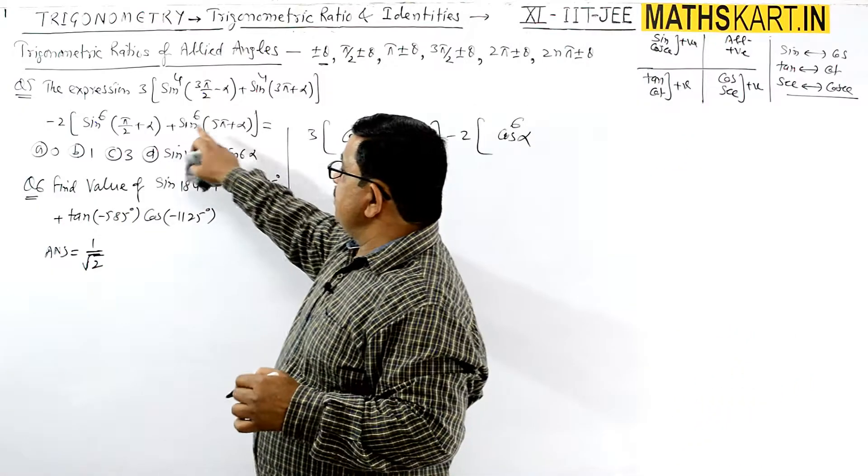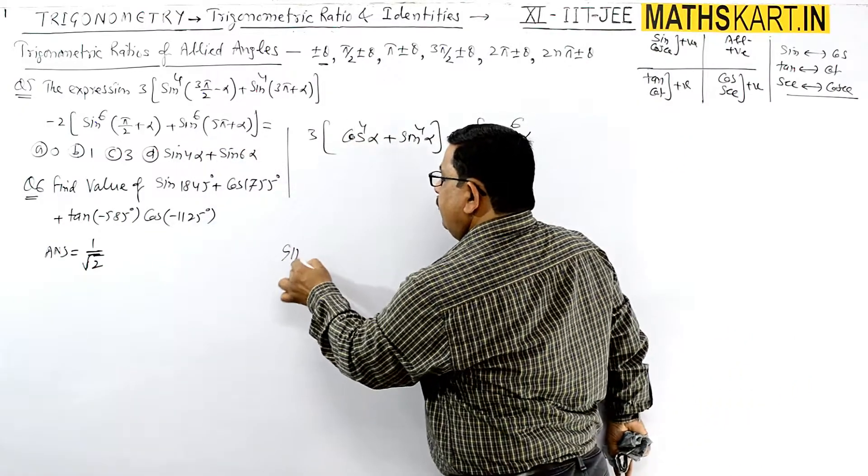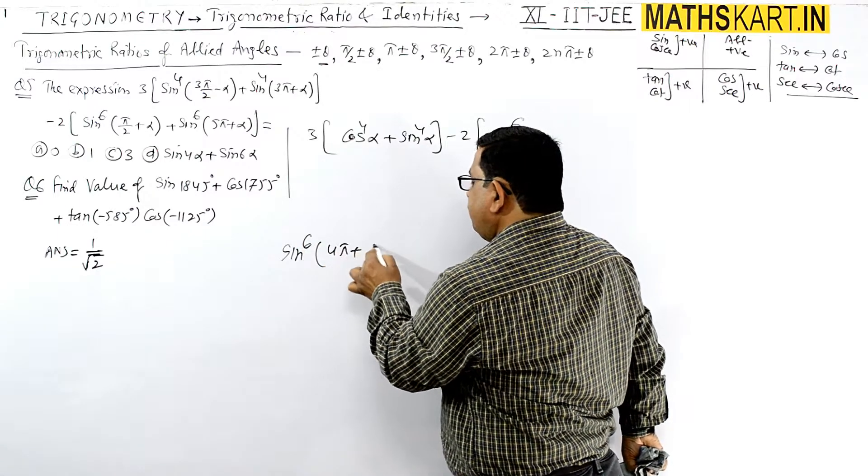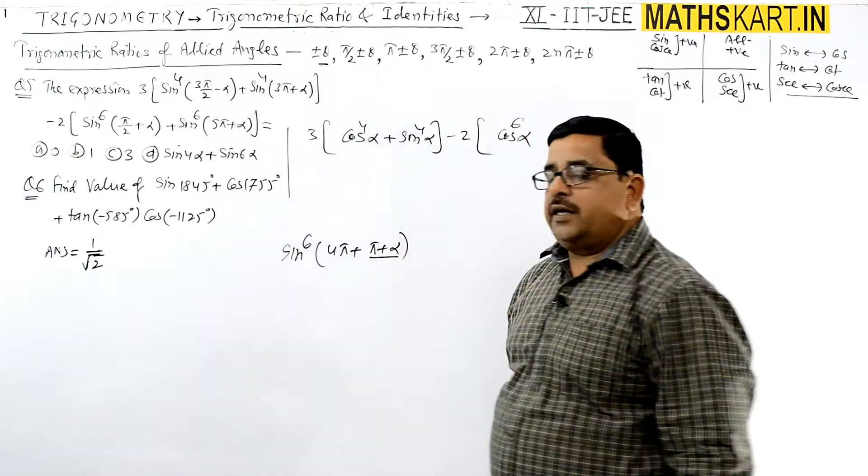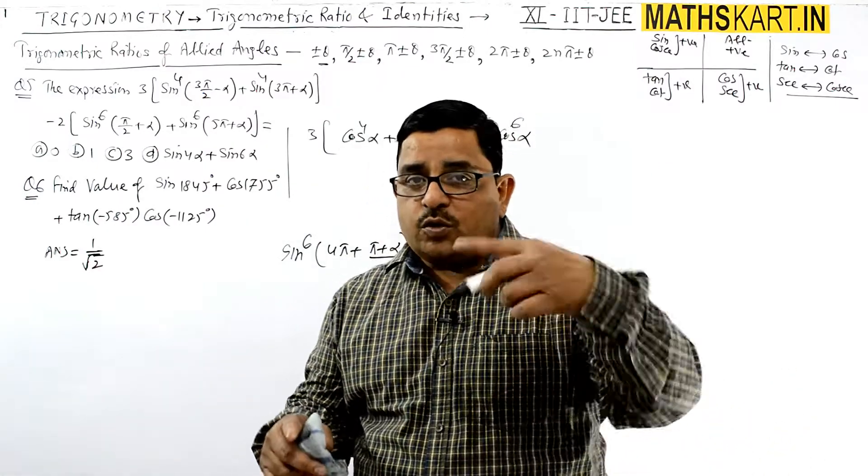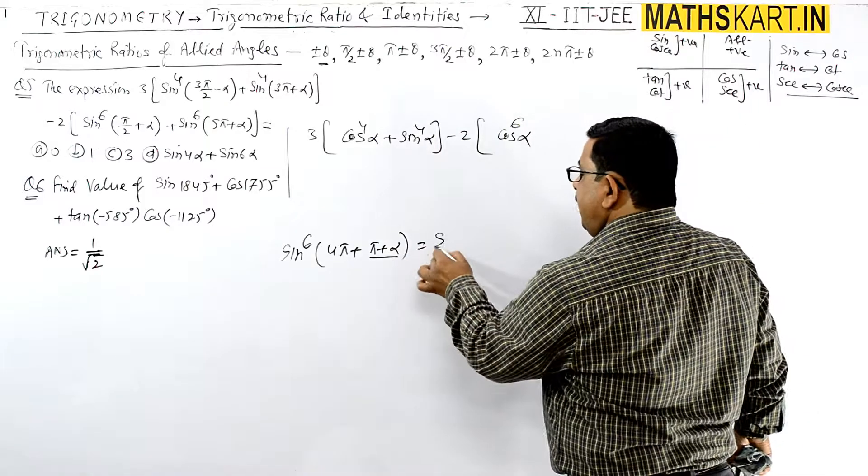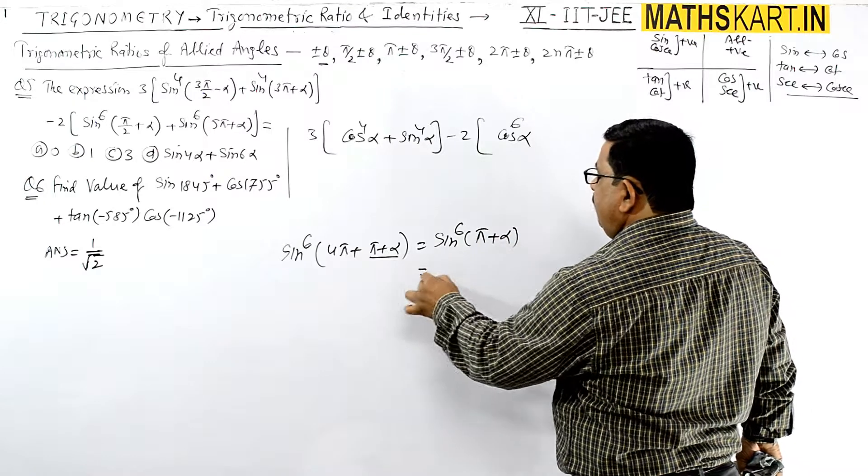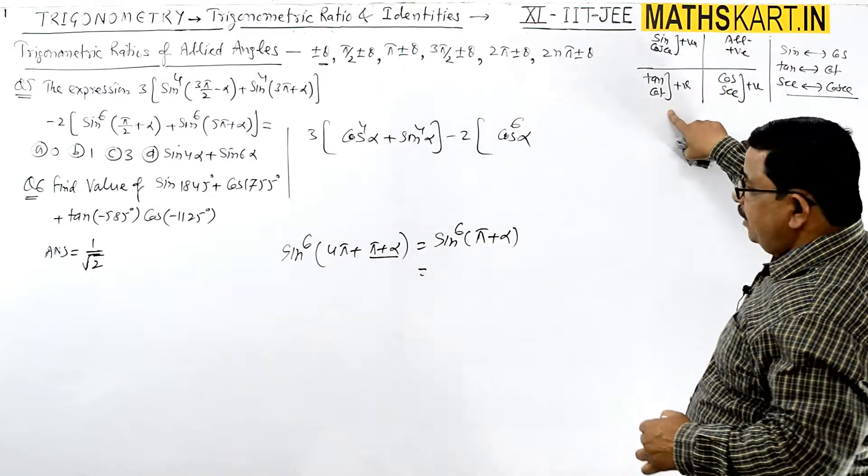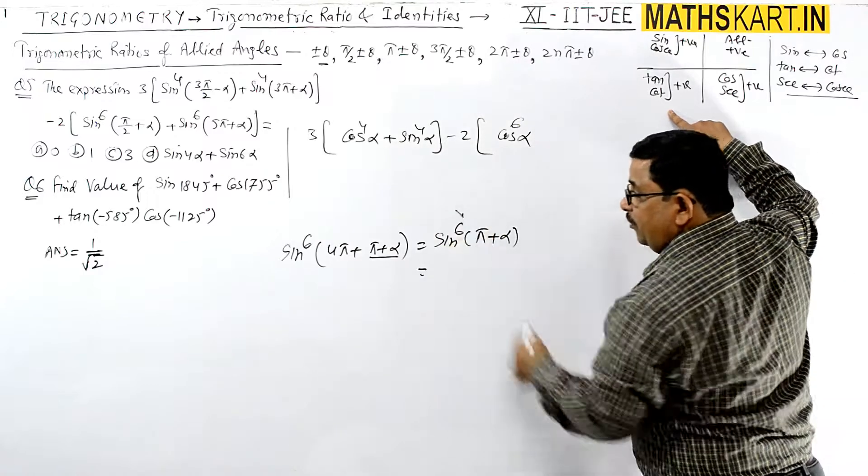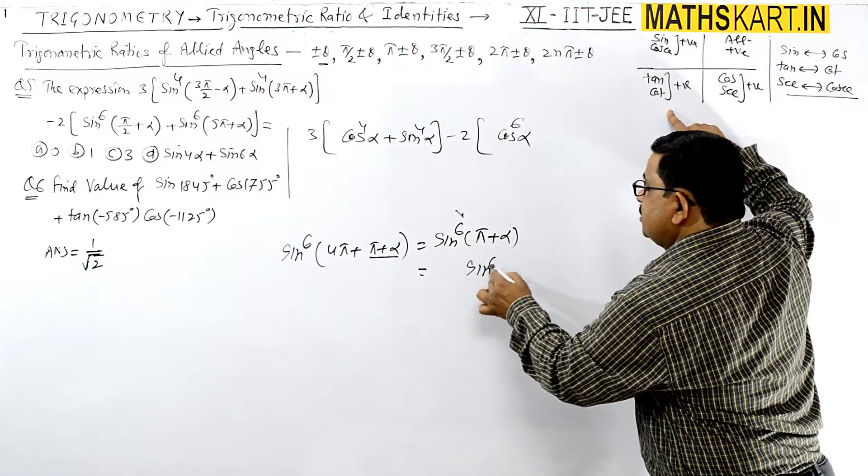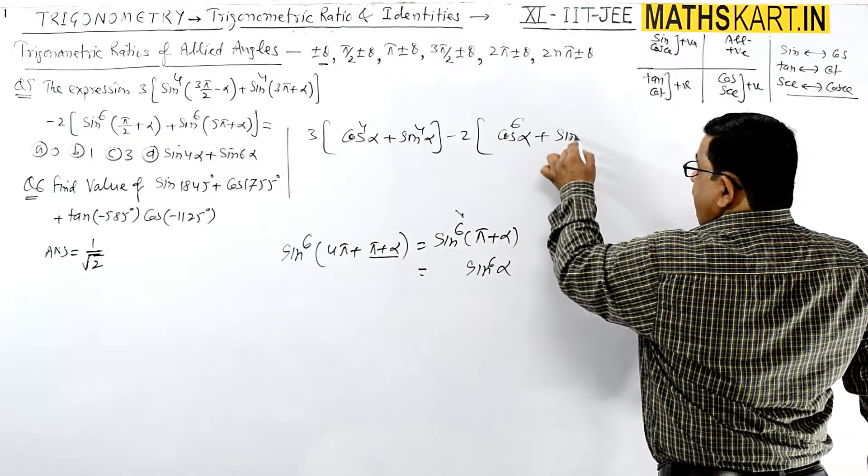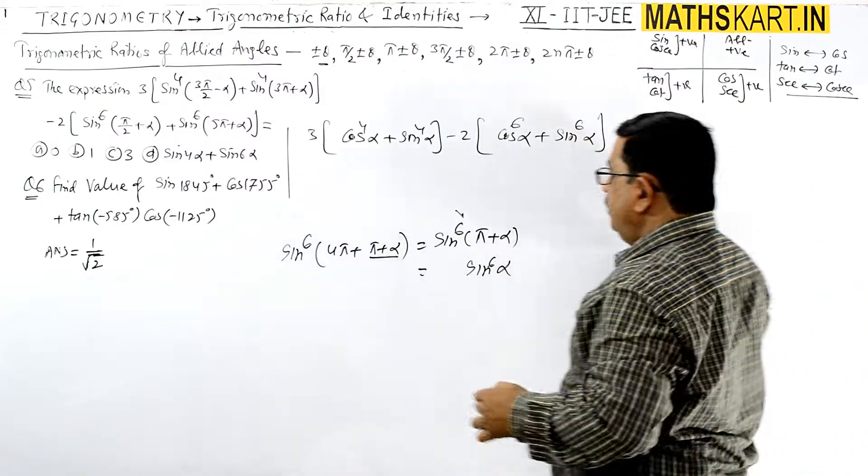And sin^6, that is 5π + α, so we separate 4π, treating π + α as the allied angle. So sin(2π) two rounds plus α, so that is again sin^6(π + α). And sin(180 + θ) is negative in minus, but this is even power, so again we get sin^6 α.